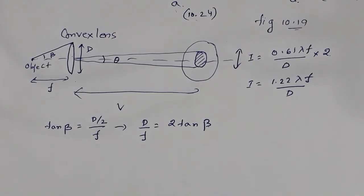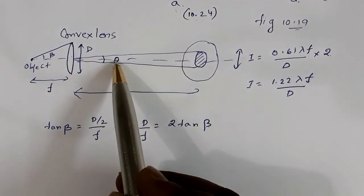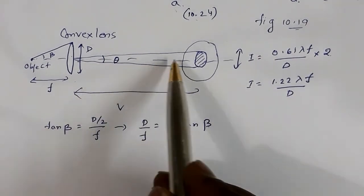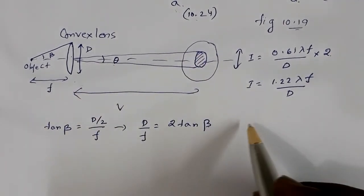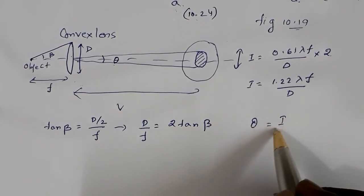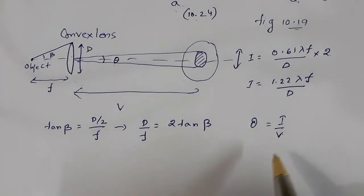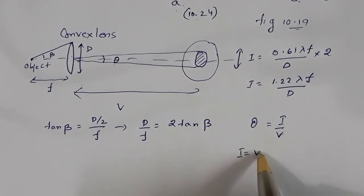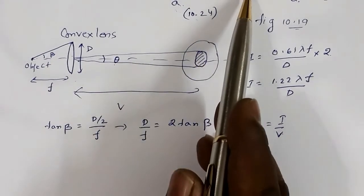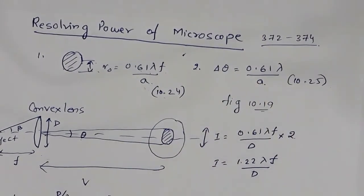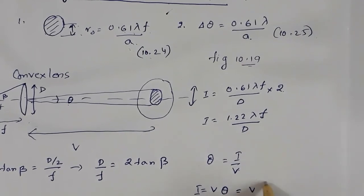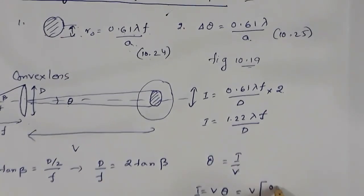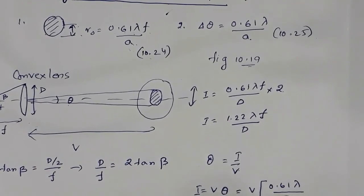If I assume the image size to be an arc, then angle equals arc length divided by radius, so θ = I/V, which gives image size I = V·θ. Now this θ is the angle of resolution, equal to 0.61λ/A. So I can write I = V · 0.61λ/A.